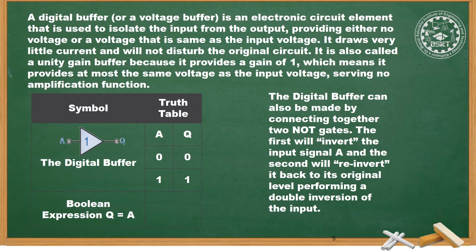It is also called a unity gain buffer because it provides a gain of one, which means it provides at most the same voltage as the input voltage, serving no amplification function. A buffer is also a logic gate type circuit, but it does not do anything to the input applied — it gives the same output as the input.